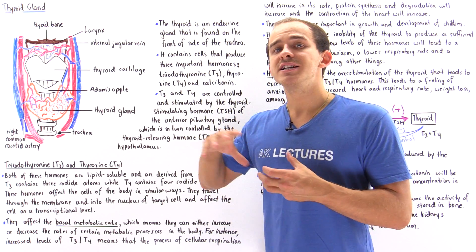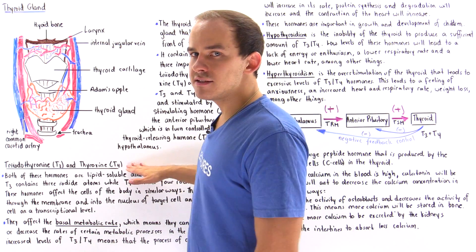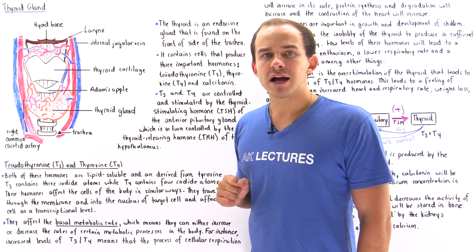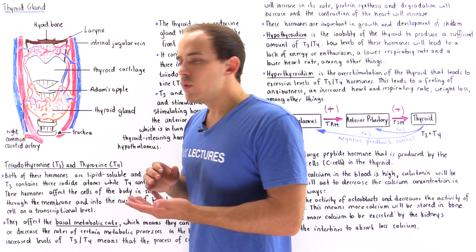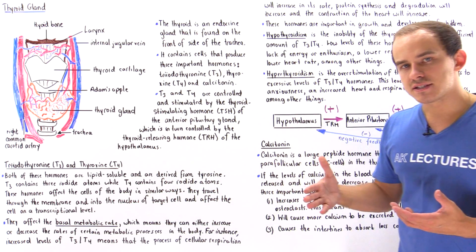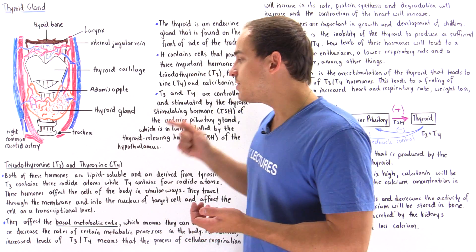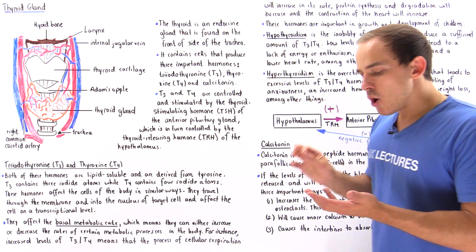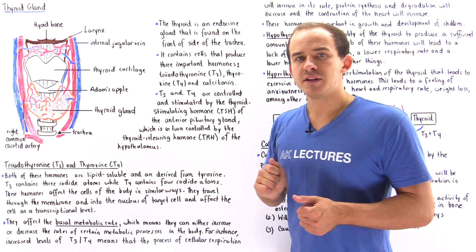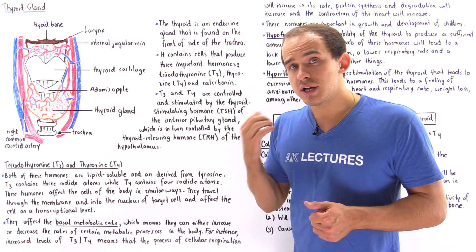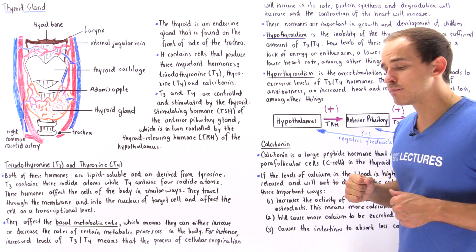We also have a negative feedback mechanism, as we'll see in a moment. Inside our thyroid gland, we have a type of cell known as the follicular cell, which is responsible for synthesizing and releasing T3 and T4 hormones. Both T3 and T4 are produced using the tyrosine amino acid. T3 simply means we have 3 iodide atoms, and T4 means we have 4 iodide atoms attached onto that particular hormone.